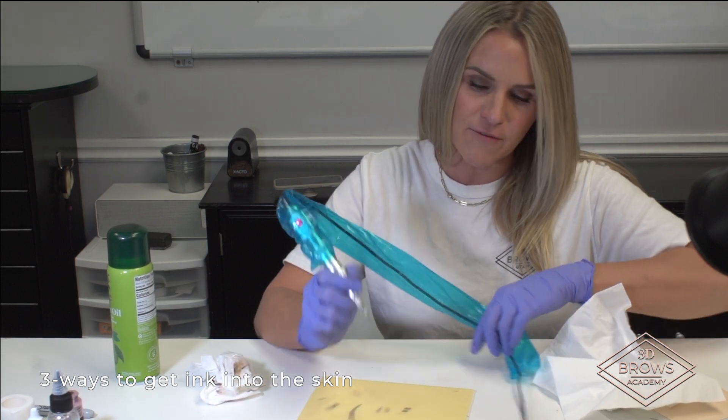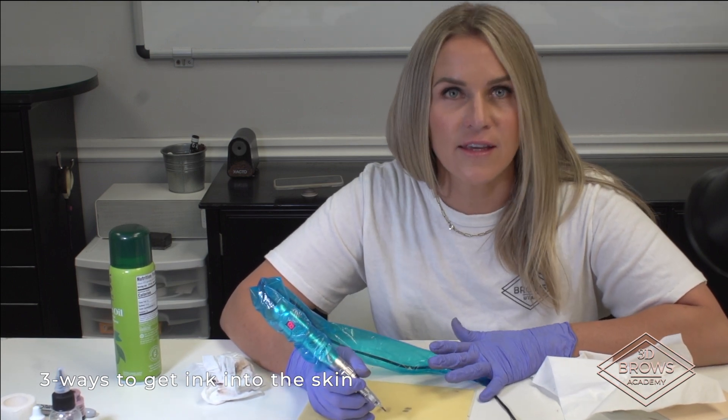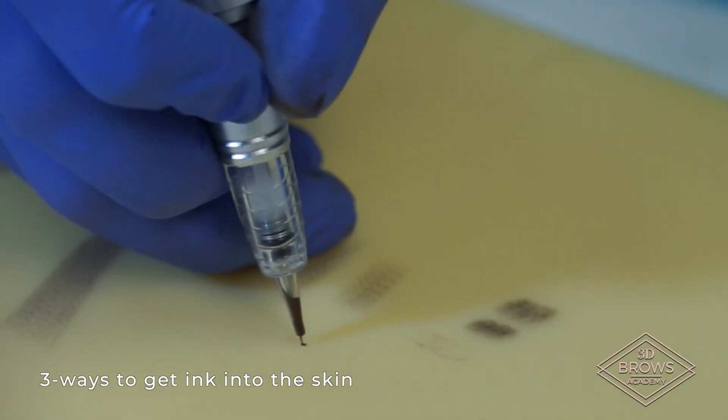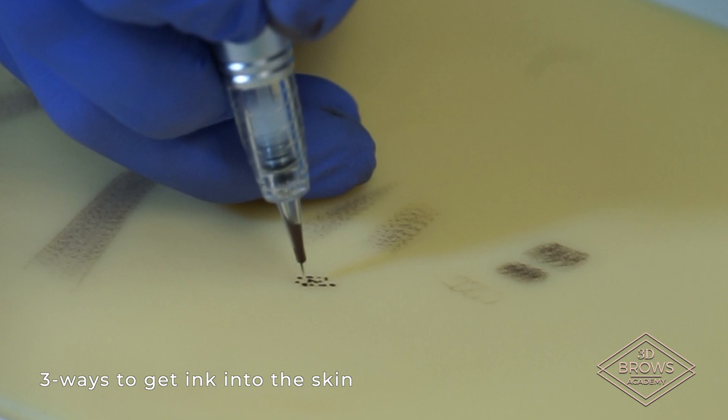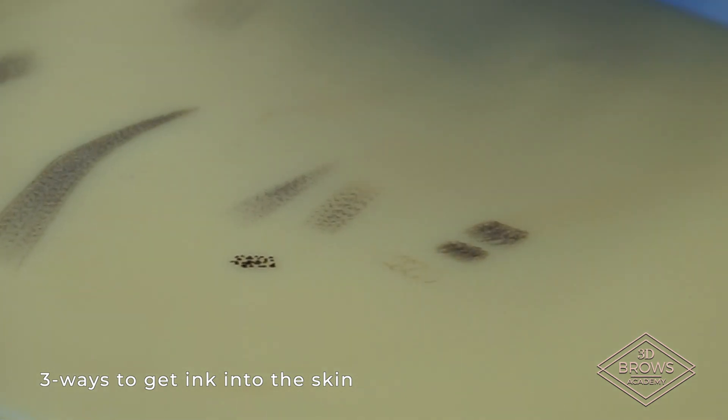But stippling, if you have an area while you're shading that you're like, why will this area not get ink into the skin? You can just stipple it a little bit. So stippling is just that dot, dot, dot. And if you have a single needle on, you could do it in the bulb, and it'll help you get that pixelated effect too.